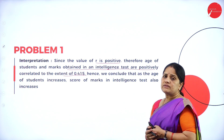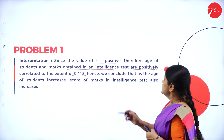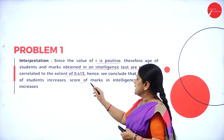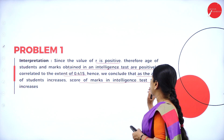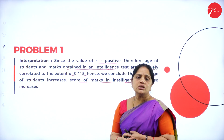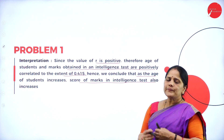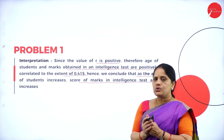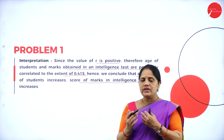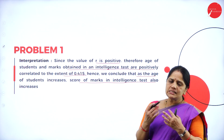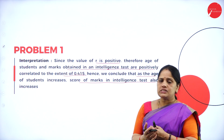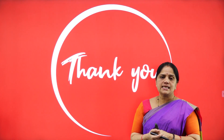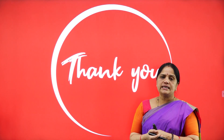Since the value of r is positive, the age of the students and marks obtained in the intelligence test are positively correlated to the extent of 0.415. We conclude that as the age of the student increases, the score of marks in the intelligence test also increases — as age increases, intelligence also increases. With this we come to the end of this session. Hope you have all followed it. Thank you.